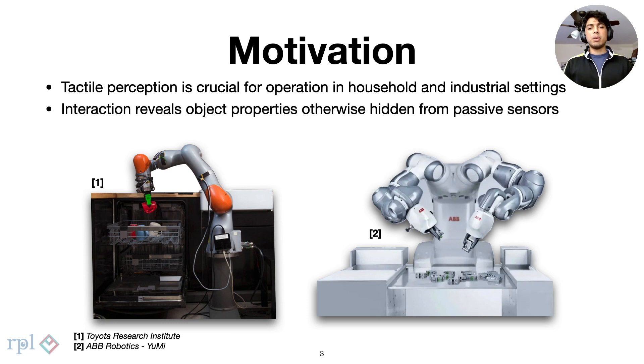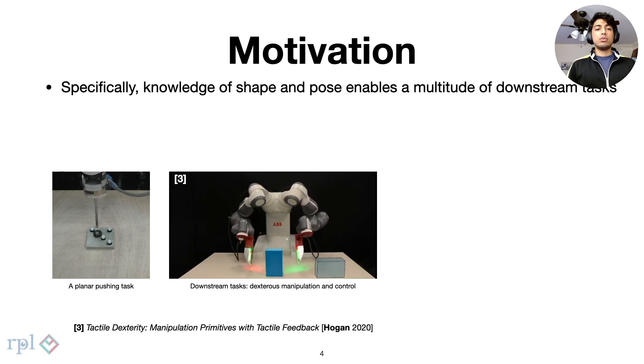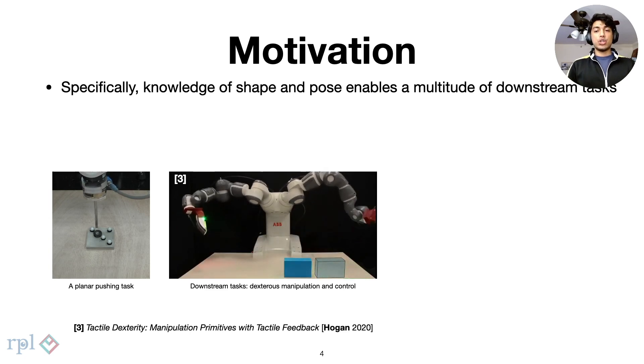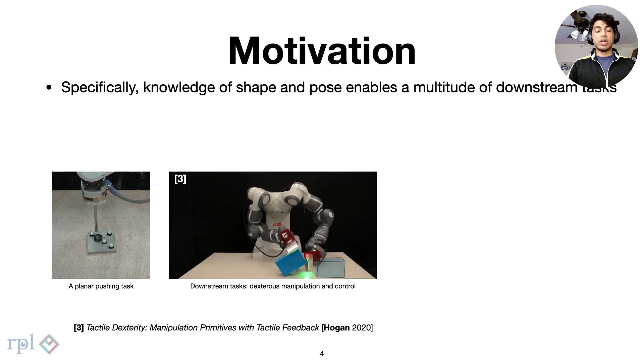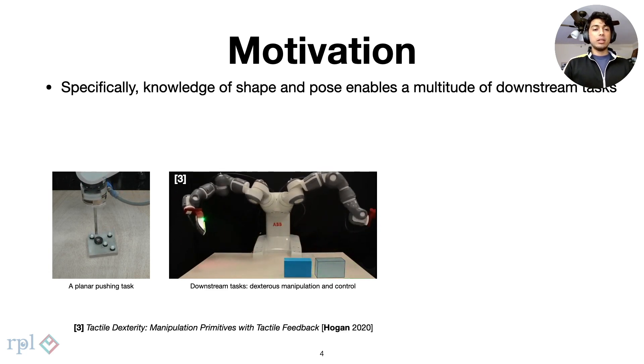Passive perception may not give us the full picture due to self-occlusion, occlusion from clutter, and visual degradation. Interaction with the environment alleviates these issues. For robots, knowledge of object properties such as shape and pose are valuable for downstream tasks. These could be contact-rich manipulation, planning, and even control.